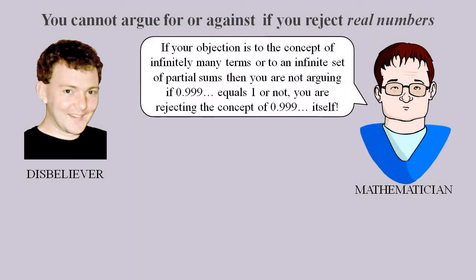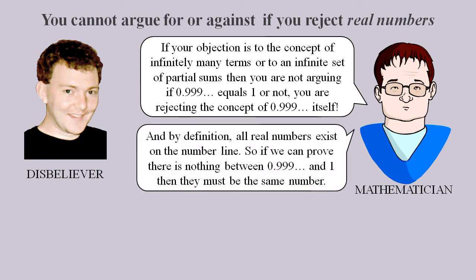They'll say 0.9 recurring equals 1 is a statement about real numbers, and so if we want to discuss the validity of this statement, then we must accept all their rules of real analysis, otherwise we're not talking about the same thing. And if we accept all their made-up rules about non-physical abstract objects, we'll have to admit they are right.